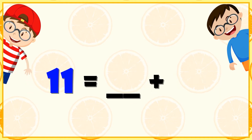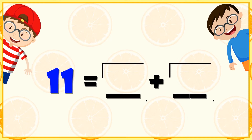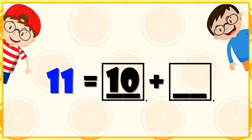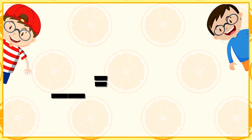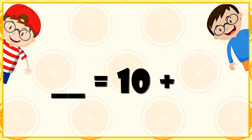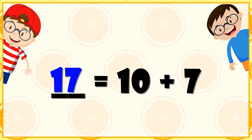11 is equal to dash plus dash. Dash is equal to 10 plus 7 — 10 plus 7 will make number 17.